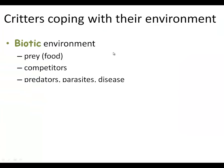Critters coping with their environment. Two things that everybody has to worry about: things that are biotic — in other words, things that are alive — things that may want to eat you, and things that you may want to eat. So everybody on this planet is a prey or a predator. The predator is the one who wants to eat; the prey is the one it wants to eat. You have competitors, predators, parasites, and disease.